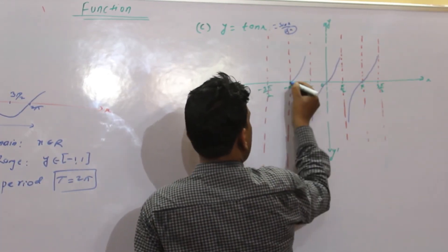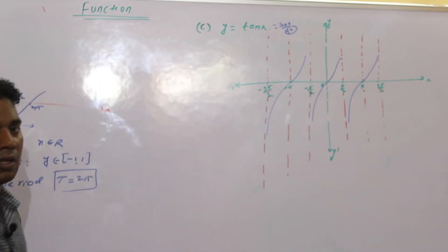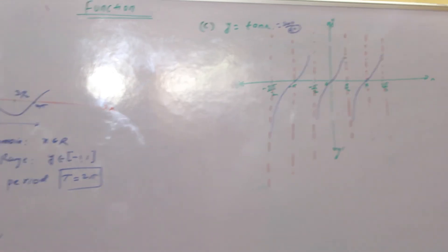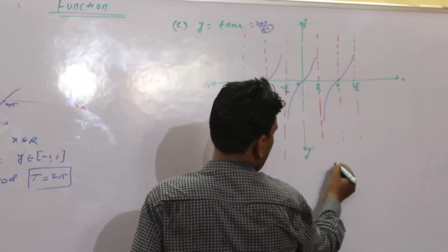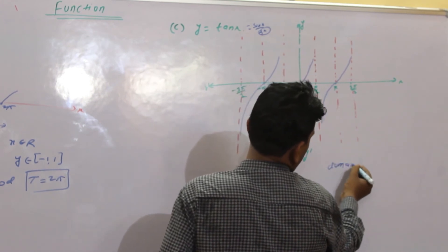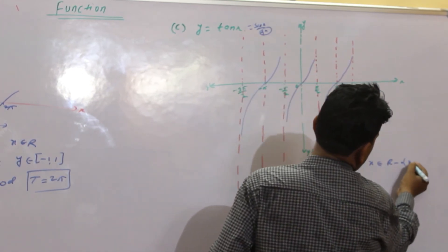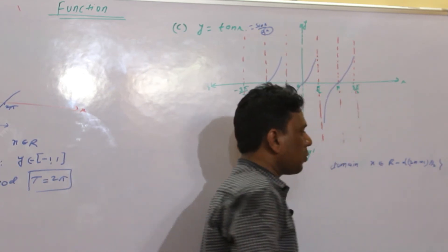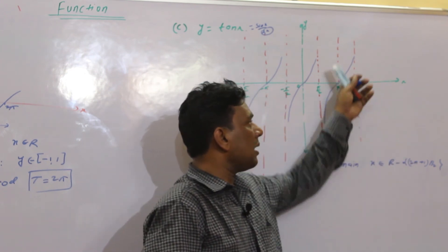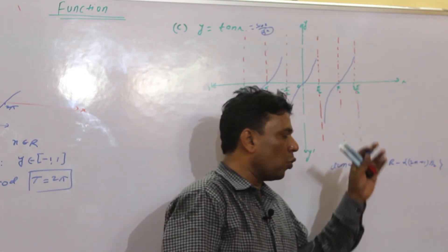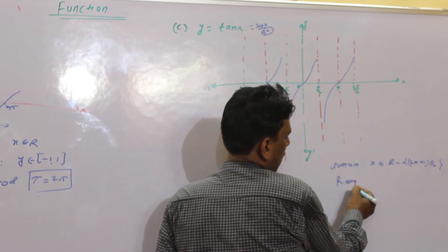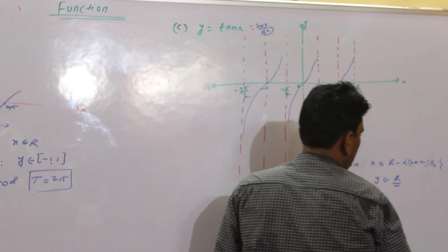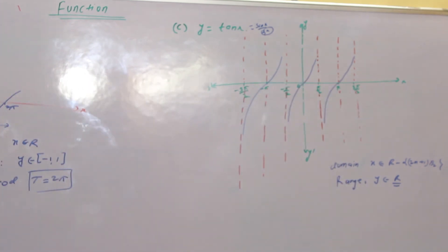This is the basic graph of tan x. Domain: x belong to R except (2n+1)·π/2 - i.e., odd multiples of π/2. Range: y belong to R. This is the basic definition of the tan x function.